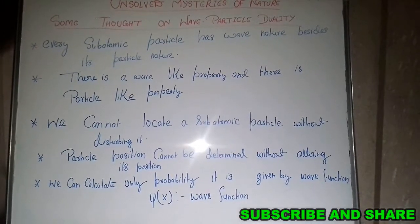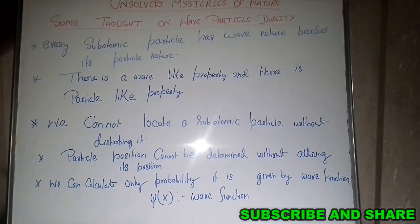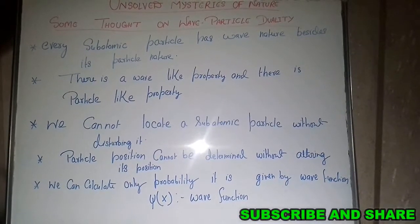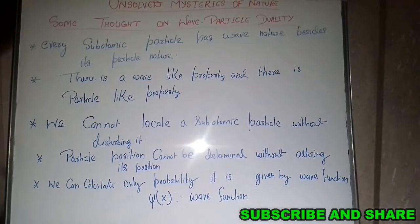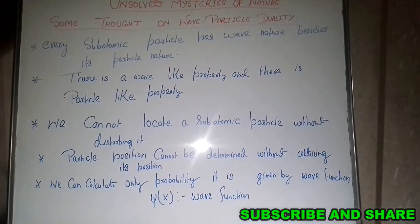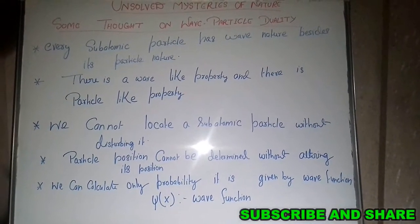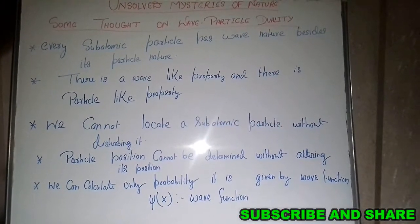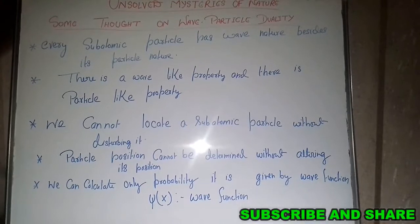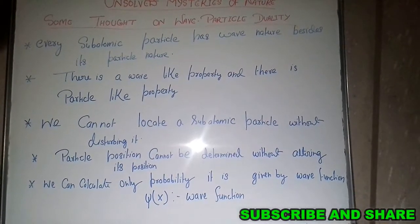Also, according to the principles of quantum mechanics, we cannot locate a sub-atomic particle without disturbing it. Ordinary objects that we see with our eyes can be located precisely in space and time using Newtonian laws of motion. But the same thing cannot be done with a sub-atomic particle — if we try to find its position, we will alter that position. That is the difficulty with finding the position of a particle.